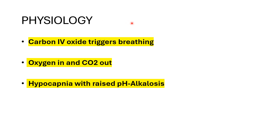In normal physiology, a high level of carbon dioxide will trigger breathing. Oxygen will then be inhaled and carbon dioxide will be exhaled. Then we will have a drop in the level of carbon dioxide, giving us apocapnia. And that will raise the level of pH, giving us respiratory alkalosis.